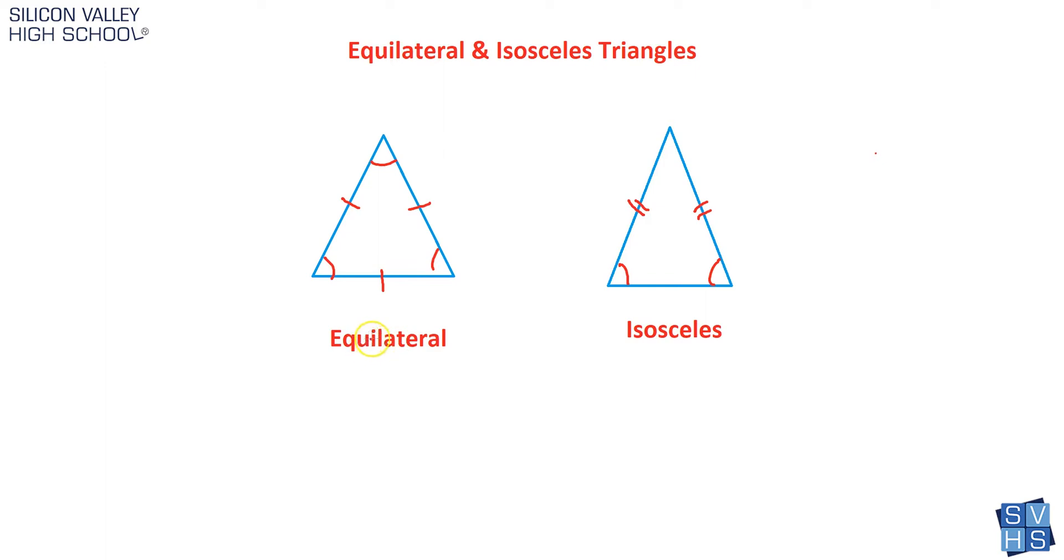Equilateral triangles - equi means same, lateral means side, so that kind of makes sense. An equilateral triangle is a triangle in which all three sides are exactly the same length. So if this was five centimeters, this would be five centimeters, five centimeters.